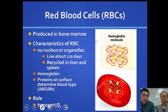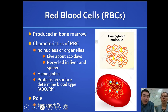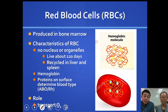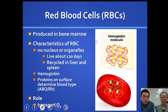Red blood cells are produced in bone marrow. They contain hemoglobin, which is responsible for attaching to oxygen in order to distribute it to the rest of the body. Red blood cells have no nucleus or organelles. Their life cycle is about 120 days, and they are recycled in the liver and spleen. The surface proteins on red blood cells determine blood type, and their role is to transport oxygen.